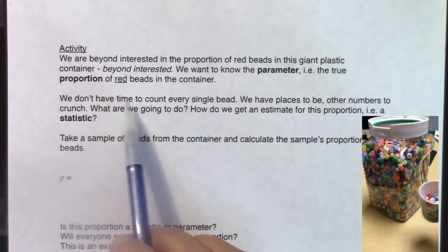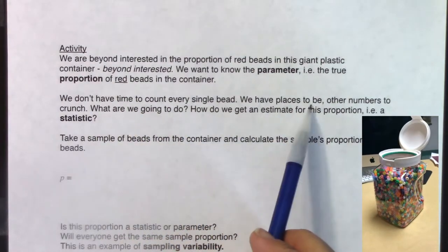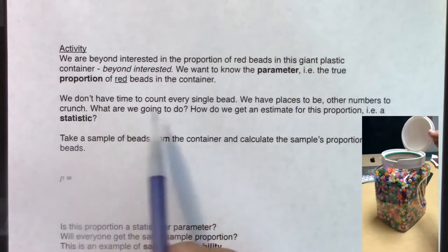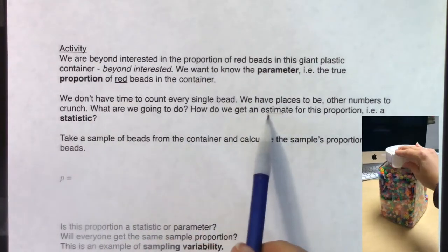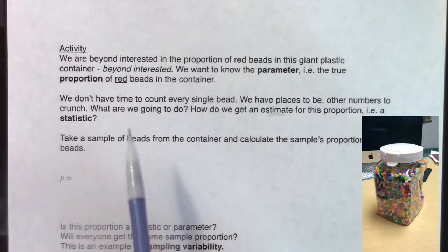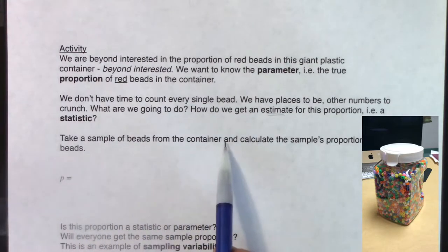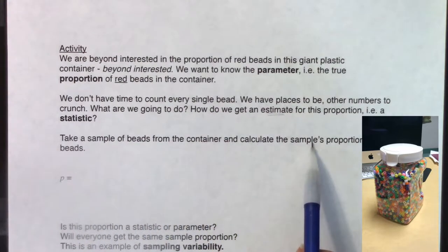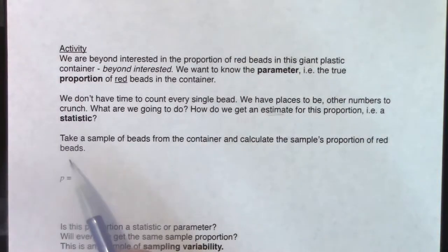We don't have time to count out every single bead. We have places to be, other numbers to crunch. What are we gonna do? How do we get an estimate for our proportion, which we call a statistic? Well, we're gonna take a sample of beads from the container and calculate the sample's proportion of red beads.